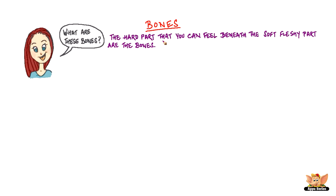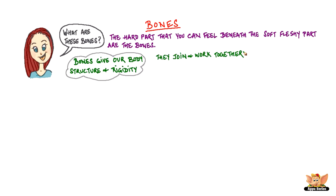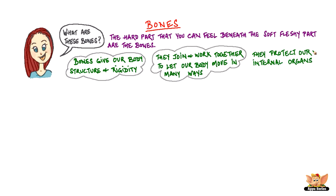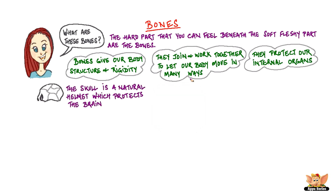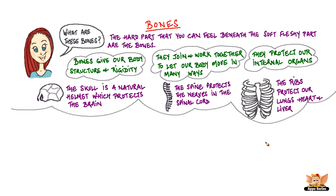And what do bones do? Bones give our body structure and rigidity. They join and work together to let our body move in many ways. And they also protect our internal organs. For example, the skull is a natural helmet that protects the brain. The spine protects the nerves in the spinal cord. The ribs protect our lungs, heart and liver.